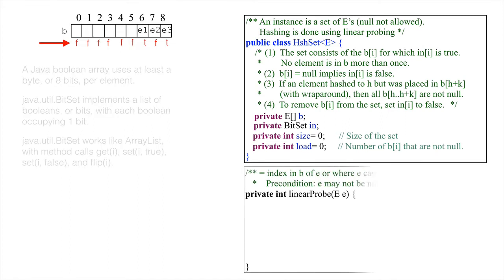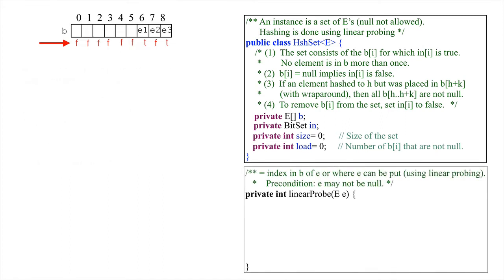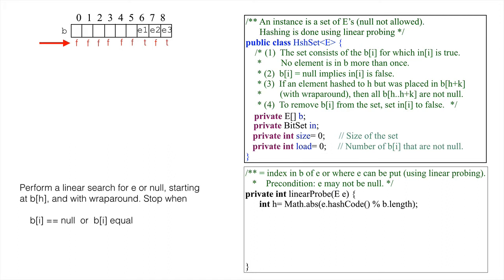With this definition, we can write method linearProbe to search for an element e, returning either the bucket where it resides or the null bucket that ended the search. First, hash e to get a bucket number h. Now, perform a conventional linear search but with wraparound, starting at b[h]. The search should stop when either e or null is found.